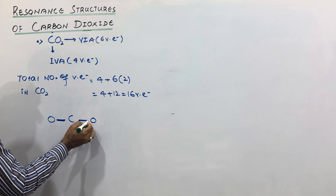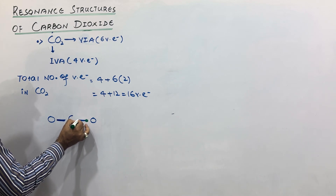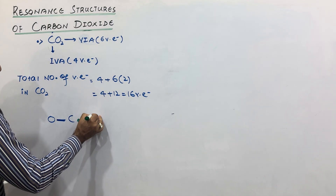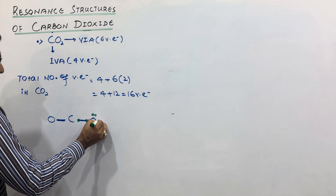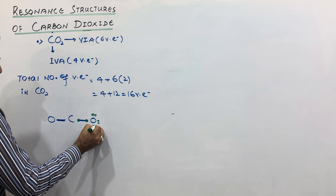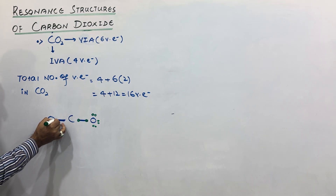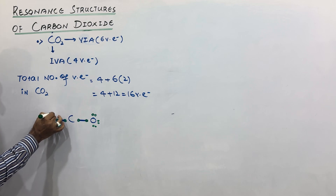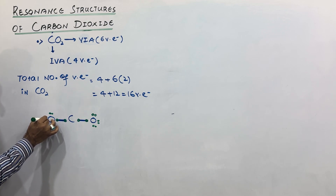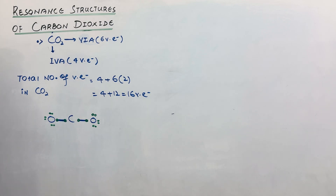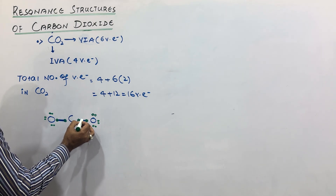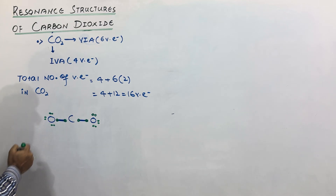Now we will complete the octet of the oxygen atoms. Each oxygen has two electrons in the form of one bond pair. So in order to complete its octet, it must have three lone pairs of electrons. Counting all electrons: one, two, three, four, five, six, seven, eight — the octet of both oxygen atoms is completed.